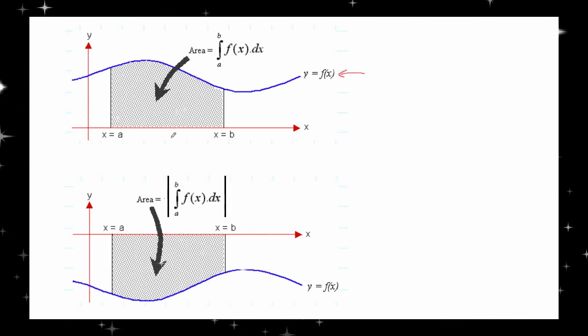On the other hand, when the function f is negative, then so is its definite integral. In this case, the absolute value of the definite integral gives us the area of the shaded region.